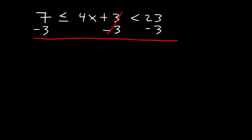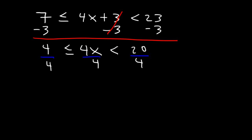After subtracting 3 from all three sides, 4x is greater than or equal to 7 minus 3, which is 4, and less than 23 minus 3, which is 20. Next, divide all three sides by 4 — our goal is to get x by itself in the middle. 4 divided by 4 is 1 and 20 divided by 4 is 5. So x is between 1 and 5.